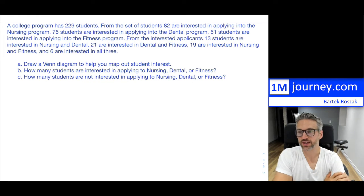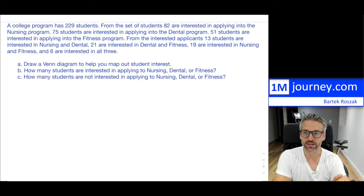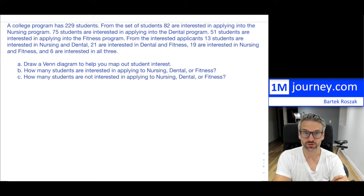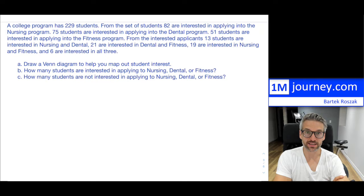So we have the following: a college program has 229 students. From the set of students, 82 are interested in applying into the nursing program, 75 students are interested in applying into the dental program, and 51 students are interested in applying into the fitness program. From those applicants, 13 students are interested in both nursing and dental, 21 in dental and fitness, and 19 in nursing and fitness. And six students are interested in all three.